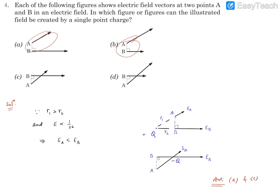So there are four options given to us and we need to identify which of these can be due to a single point charge. So we need to check the options, right?